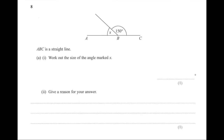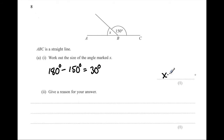Question 8A. ABC is a straight line. Work out the size of the angle marked X and give a reason for your answer. Angles in a straight line add up to 180 degrees. To work out X, we do 180 degrees minus 150 degrees, which equals 30 degrees. So X equals 30 degrees. The reason is: angles in a straight line add up to 180.